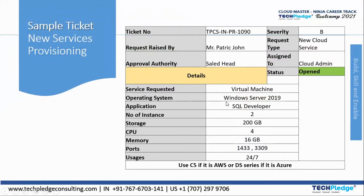The operating system required is Windows Server. The application is SQL Developer. The number of instances is 2. Storage is 200 GB, CPU is 4, and memory is 16 GB. Ports are to be opened, and usage is 24x7. It is recommended to use C5 instance type if on AWS, or DS series if on Azure, to satisfy these requirements.